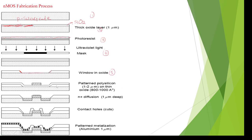In the sixth step, to design a gate terminal, we deposit the polysilicon material at the middle of the substrate. The polysilicon symbol is a box with lines on the right side. Generally, polysilicon material is used to design a gate terminal, so we deposited it and designed the gate terminal in the sixth step.